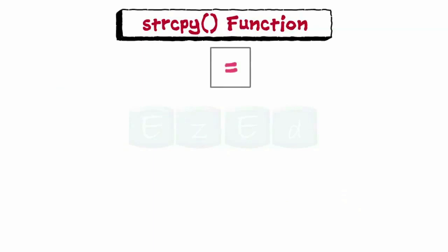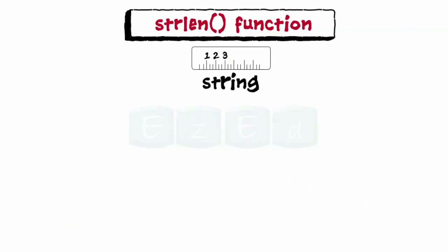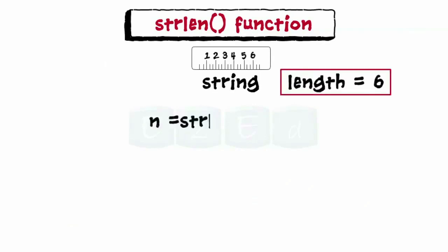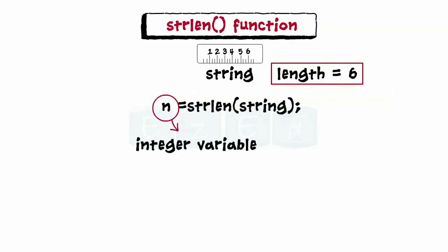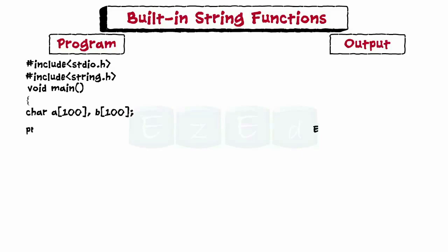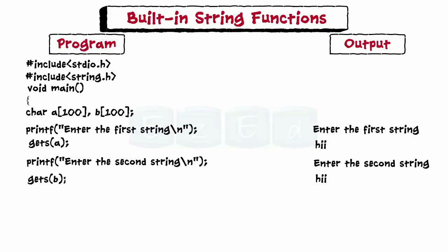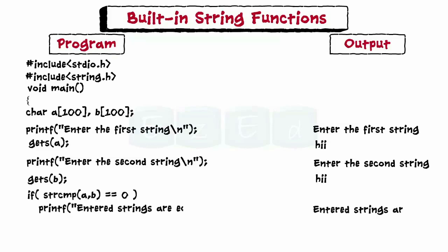Moving on to strcpy — it works like the assignment operator, copying the content of string2 to string1. The next function is strlen, which counts and returns the number of characters in a string, where n is an integer variable storing the length. To illustrate, a program to compare two strings using strcmp starts by including the string.h library, declaring the main function and variables, then asking the user to enter two strings scanned using the gets function. An if condition then compares the two strings and checks whether they are equal.